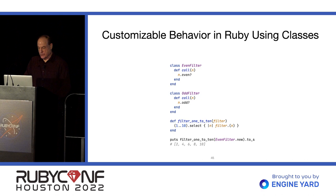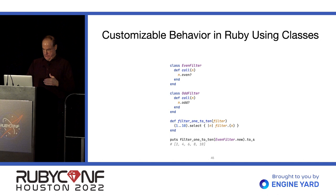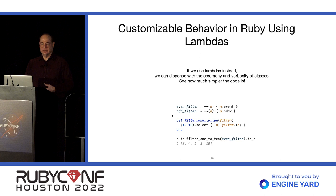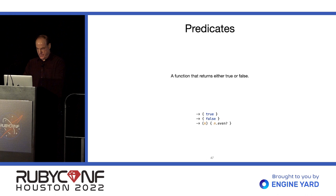For a lot of us coming from object-oriented languages other than Ruby, we're used to using classes for polymorphism. In Java, you'd need to create an interface defining the call method — it's a lot of verbosity. Compare that with Lambdas: they're just so simple and really good in cases where you just need something straightforward.